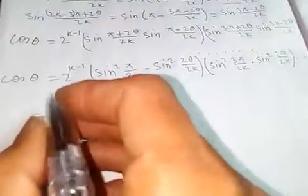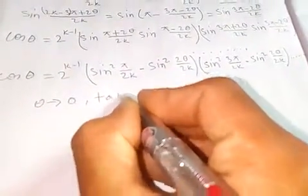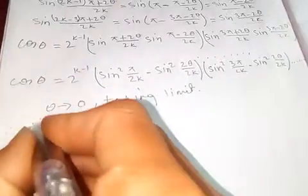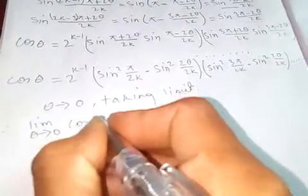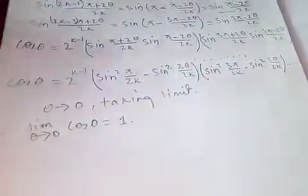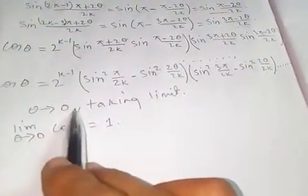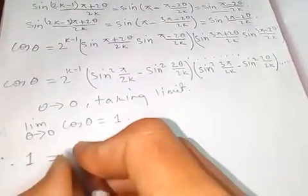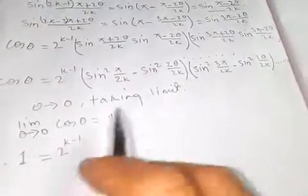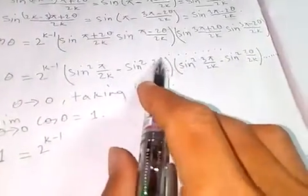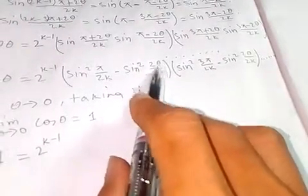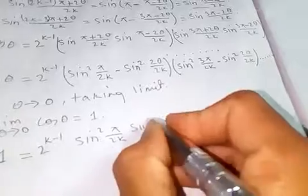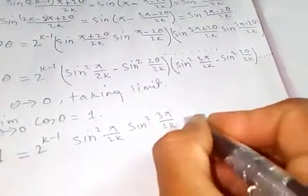Now taking the limit as theta tends to zero: the left-hand side, limit of cosine theta as theta tends to zero, is just one. On the right-hand side, taking the limit, we get one equals 2 to the k minus 1 times sine squared pi over 2k times sine squared 3 pi over 2k, and it goes on.